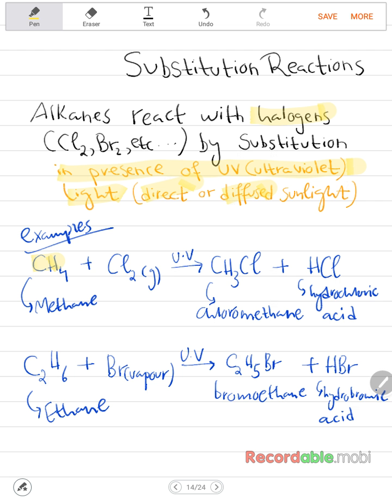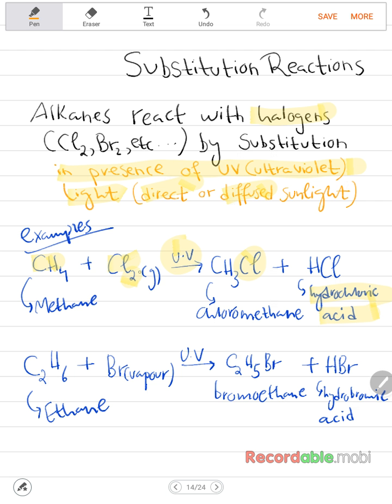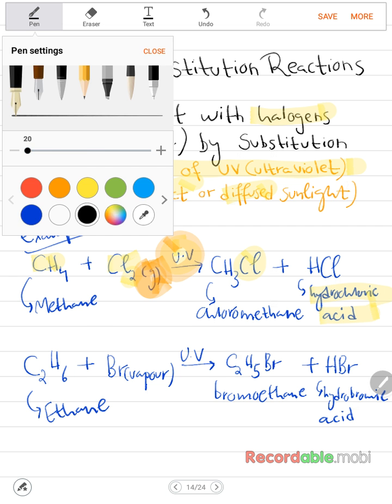Quick example. Here we have methane. When it reacts with chlorine under UV light, the presence of UV light, it gives you chloromethane. One of the hydrogen atoms has been replaced by a chlorine atom, and that hydrogen atom reacts with the second chlorine atom to form hydrochloric acid. Let me highlight this before I draw the structure. The chlorine has to be in gaseous state because alkanes are generally unreactive. So in order for this reaction to take place, not only UV light has to be present, the chlorine has to be in gaseous state, not liquid or aqueous.